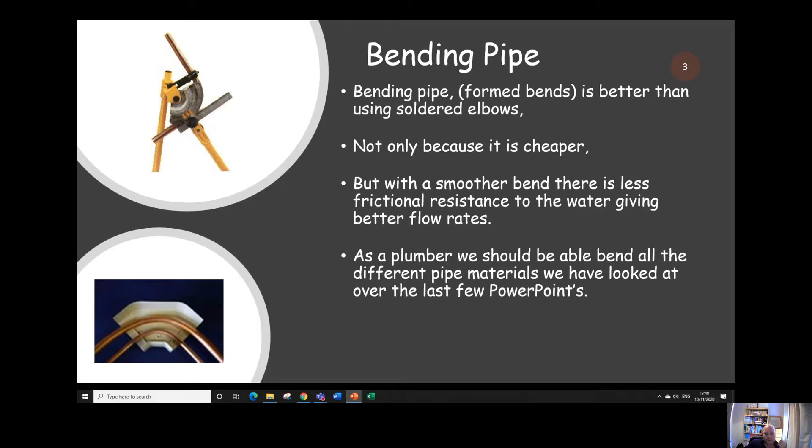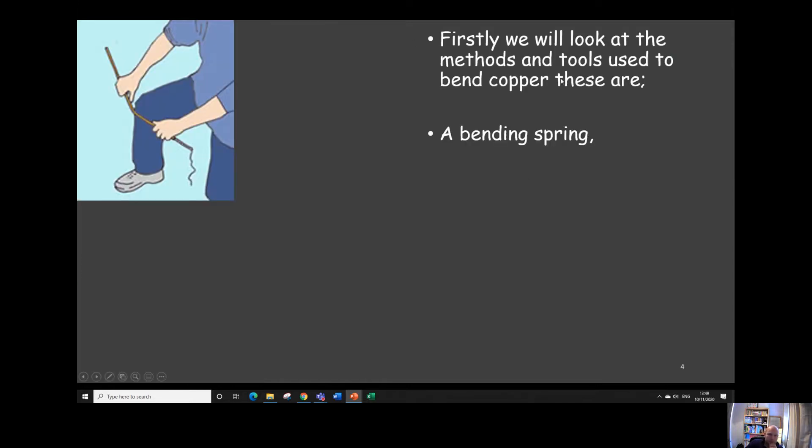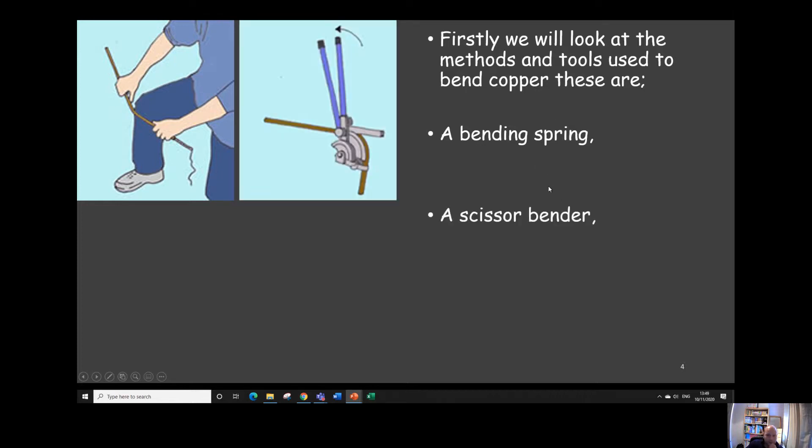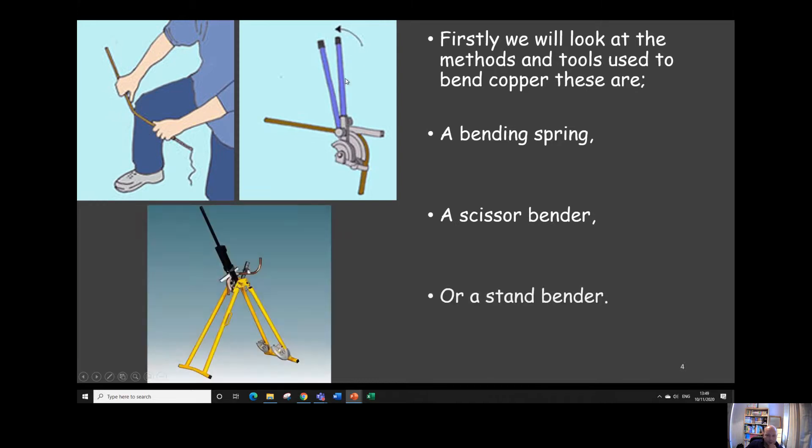And as a plumber we should be able to bend most of the pipe materials we've looked at over the last few powerpoints. There's different tools and methods used for each material. When bending copper, we can bend copper using a number of different things. We can bend it with a bending spring. We can bend it with a scissor bender like this one just here. Or we can bend it with a stand bender like this one here.